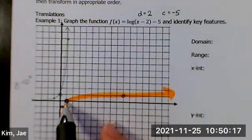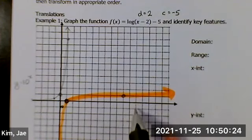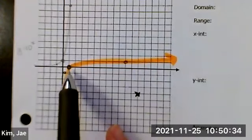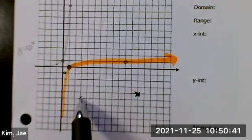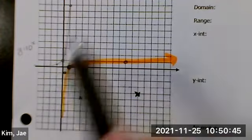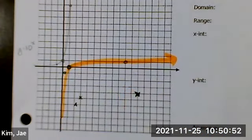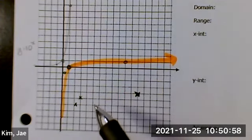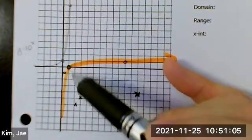So I'm going to move this point two across and five down: 1, 2, 3, 4, 5. I'm going to move this point, the x-intercept, 1, 2, 1, 2, 3, 4, 5 down. And this point, the 0.1, it's going to be 1, 2, 1, 2, 3, 4, 5, just off of the thing.